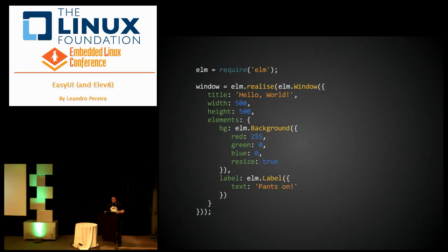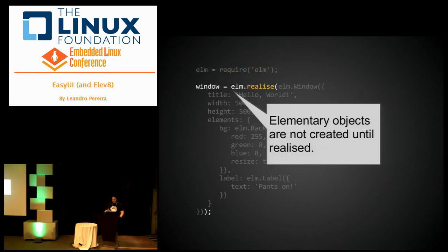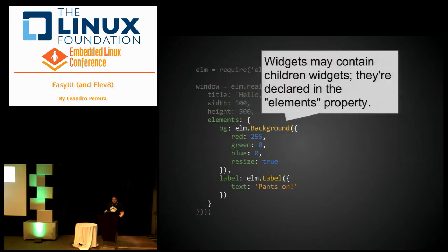Here's an example — let's create a Hello World window. We load the Elementary library, which is a widget library, and realize a window object. The Elementary library is always declarative, so objects are not created on screen as we realize them. We declare all the parameters — the title, width, height — and the elements themselves. First we have a background element, which in this case is red, and a label with the text 'pants on'.